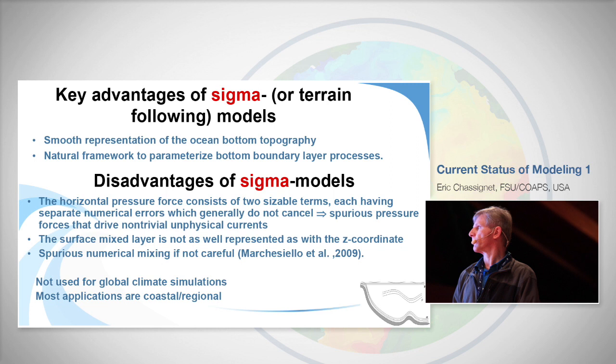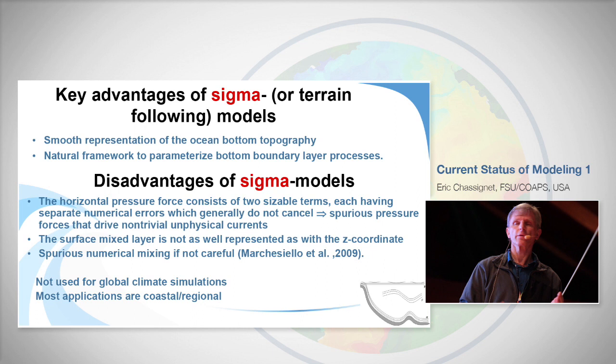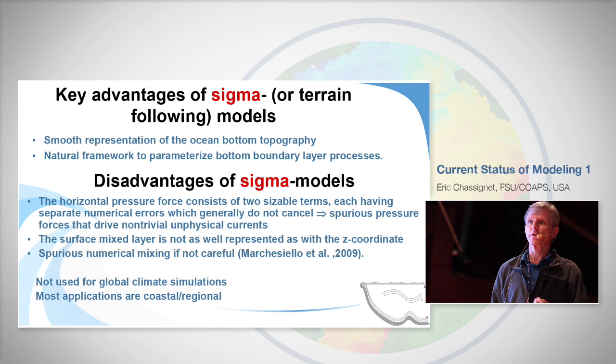In general, because of the pressure gradient error, the topography must be very smooth. Sigma coordinate models are therefore not used for global or long-term climate simulations. They are used for regional and coastal models at very fine resolution, where the topography can be well resolved.